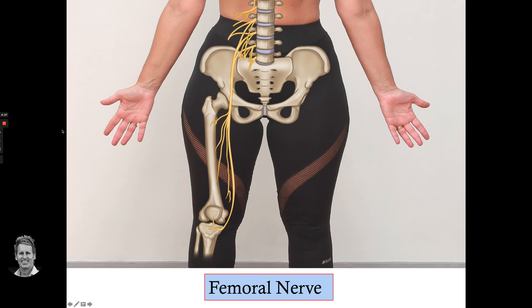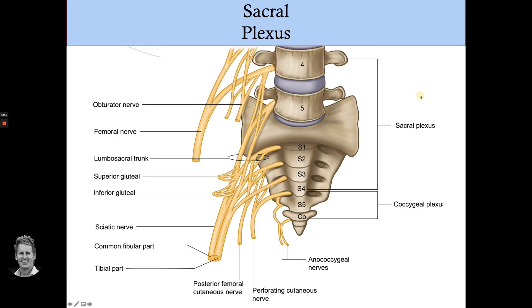Moving to the sacral plexus — it comes from L4, L5, S1, S2, S3, and S4 primary rami. You can see it here, along with the coccygeal plexus.